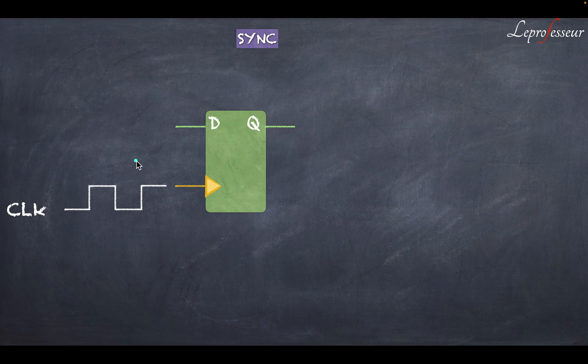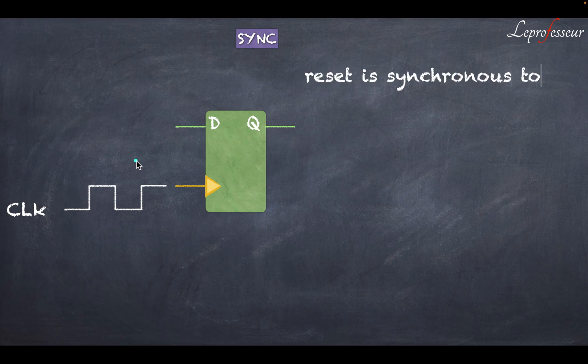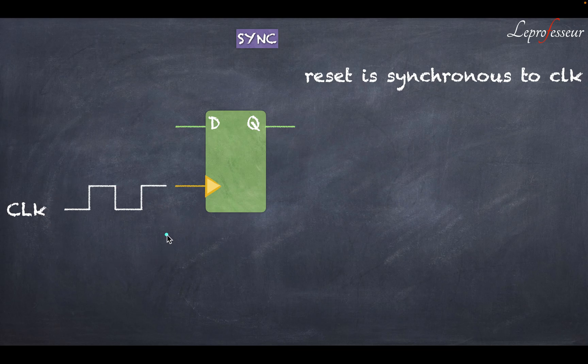Now let's see what are the advantages and disadvantages of this style of reset. First of all, as you can see here, the reset is considered as synchronous with respect to clock, which means that the clock needs to be present, needs to be switched on in order for this circuit to get into a known state.